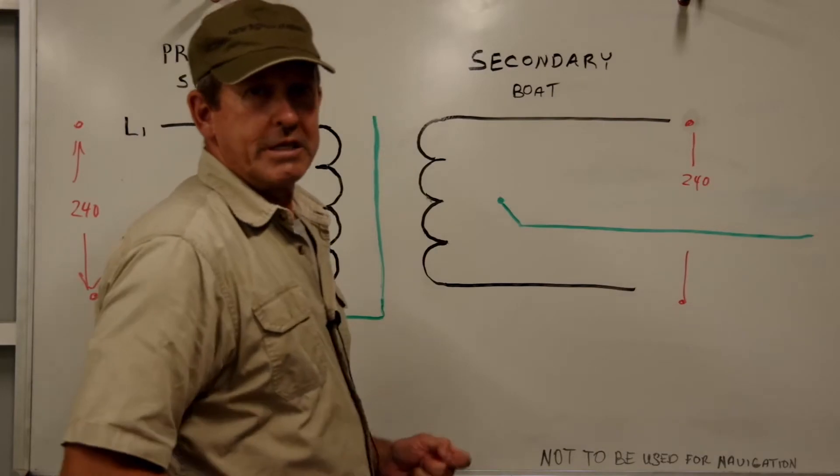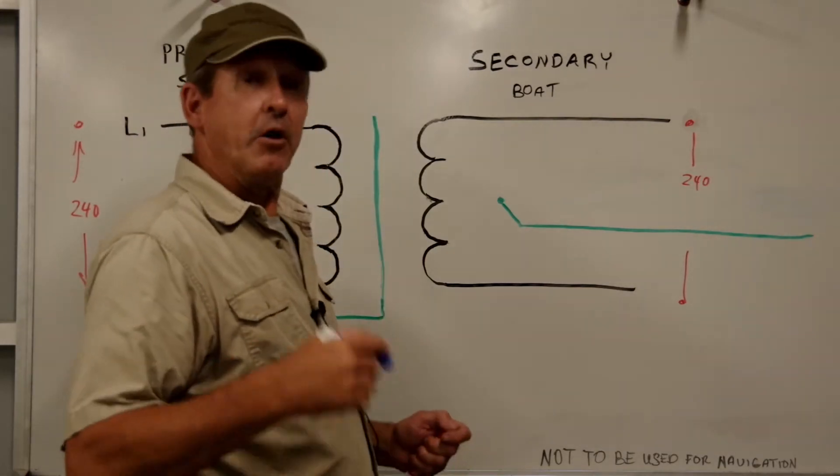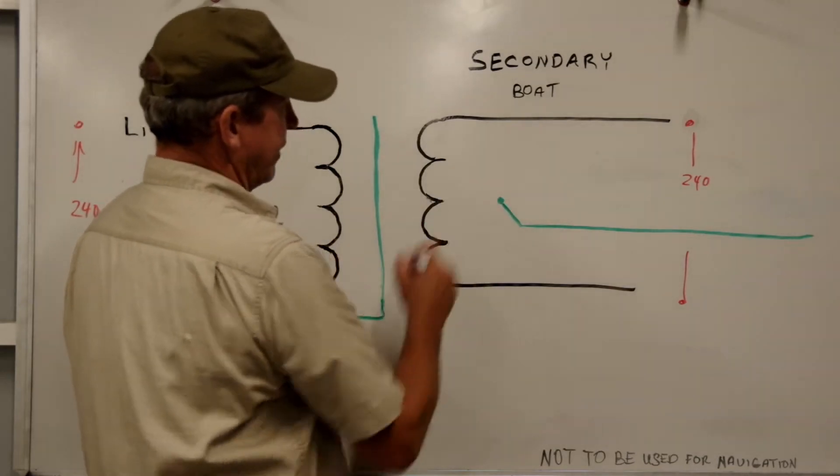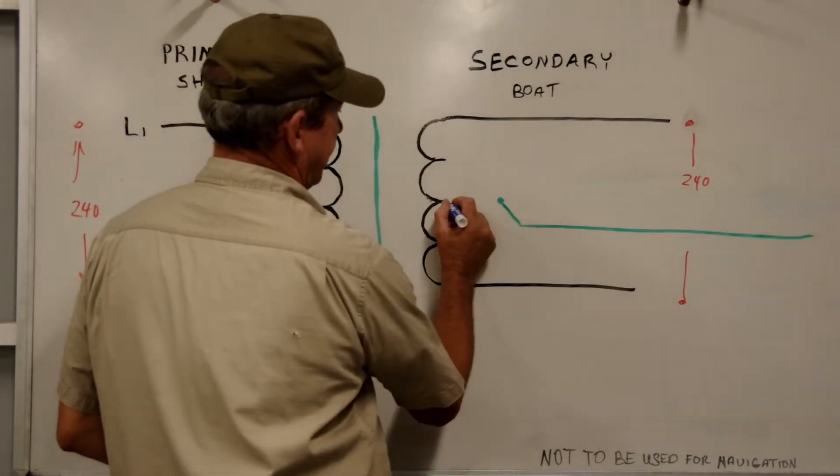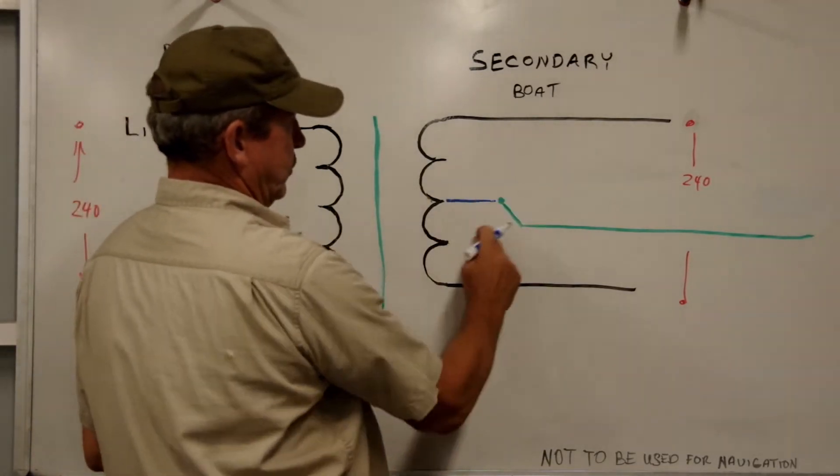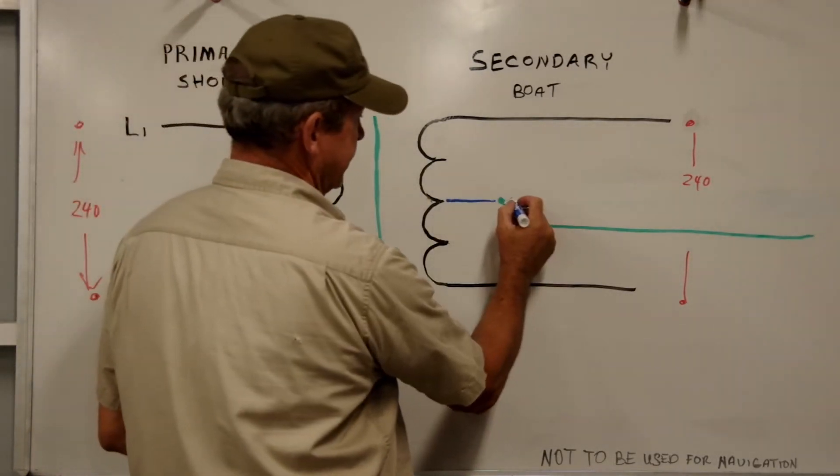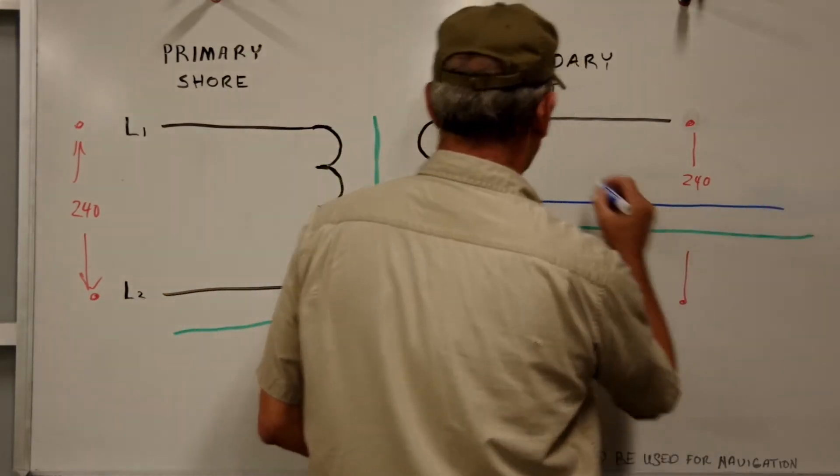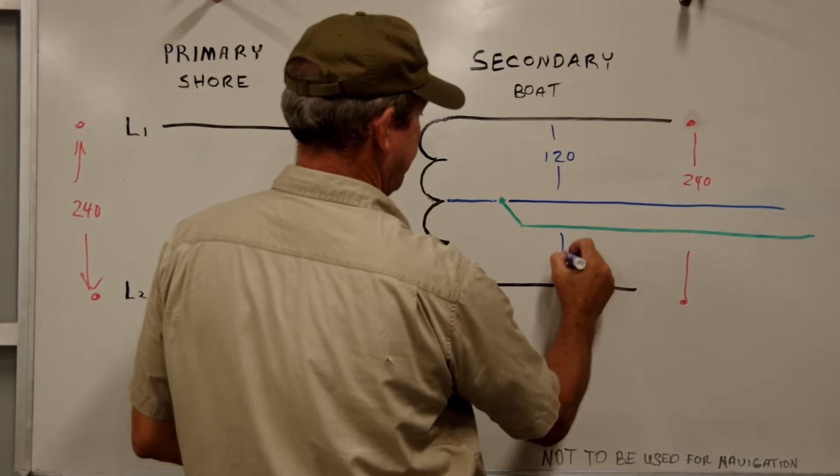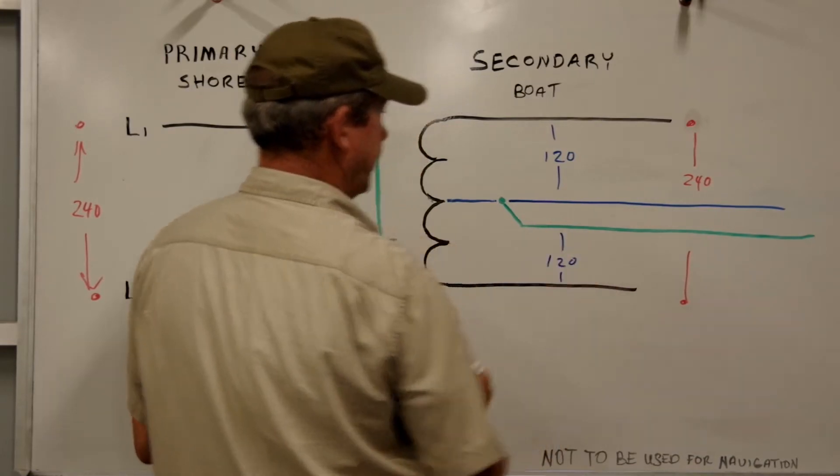I got some 120 stuff on my boat that needs to be powered through this thing, so what do we do? We come right to the halfway point in our windings, and we've reduced the number of windings on our secondary side with our neutral, and now we have 120 and 120 there.